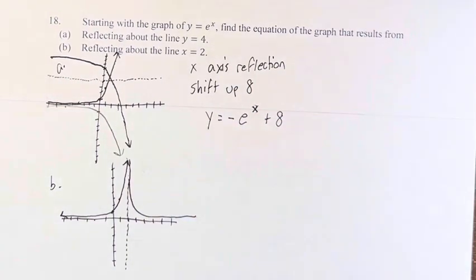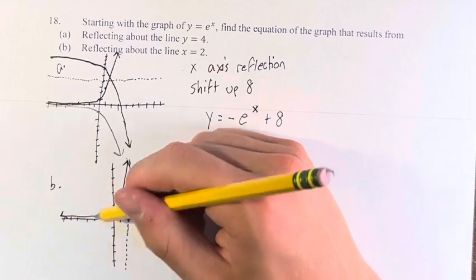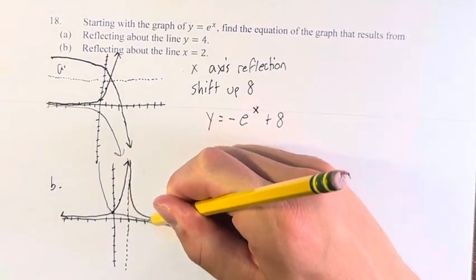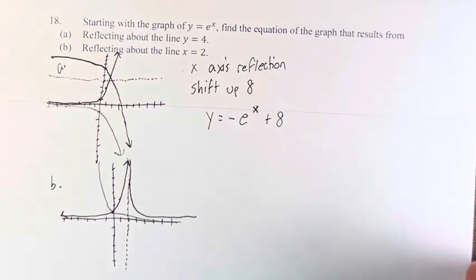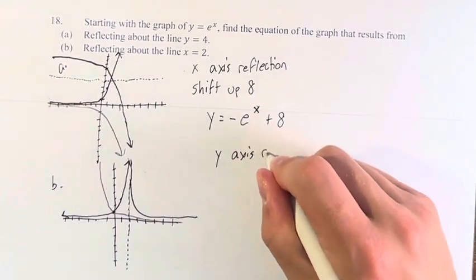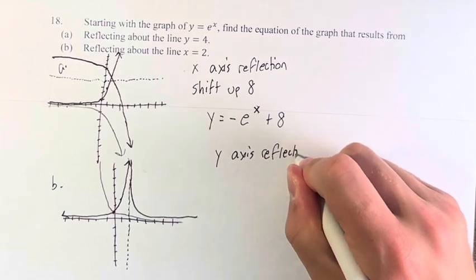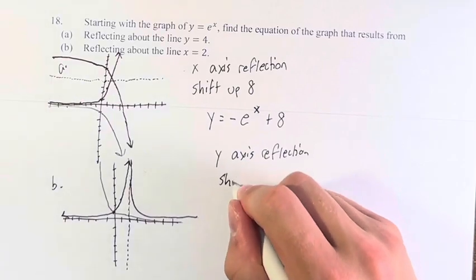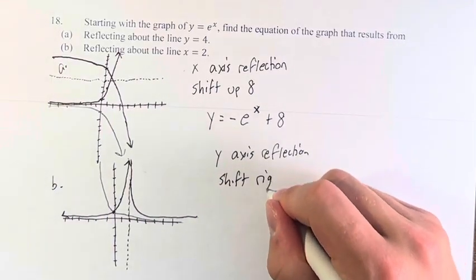How do we actually do this? Well, if you notice, in a similar way to our x-axis reflection, if we reflect this original function against the y-axis, it looks like that. So if we do a y-axis reflection, then that gets us halfway. And we have to shift over 4 to match this function. We're shifting to the right, 4.